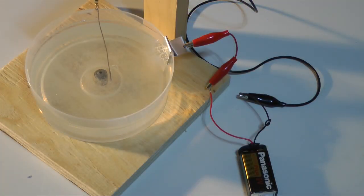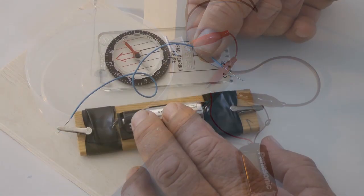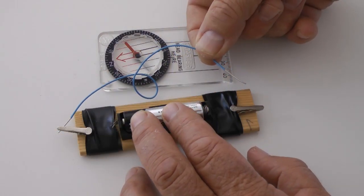This is a working model of Michael Faraday's electromagnetic rotator. First demonstrated in 1821, this simple device revealed the potential of electromagnetism, the magnetic field that appears when electrical current flows through a conductor.